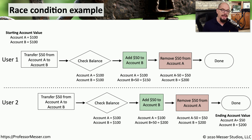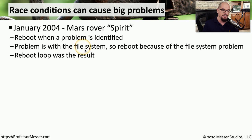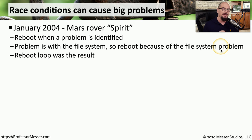This is a simple example of a race condition, but the results can have very significant outcomes. It's important that developers take into account every possible scenario and when those scenarios might occur. An example of a race condition that occurred in space was in January of 2004 with the Mars Rover Spirit. The Spirit Rover is designed to reboot its operating system whenever it runs into a problem it can't resolve. It found a problem with the file system, rebooted, but found the file system was corrupted during the boot process, causing a reboot loop. They ultimately told the Rover to reboot into a limited safe mode to repair the file system and get back up and running.